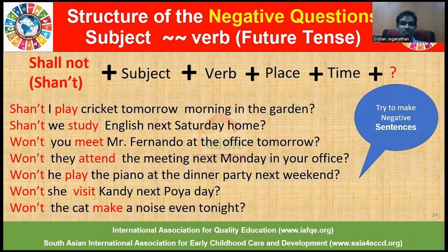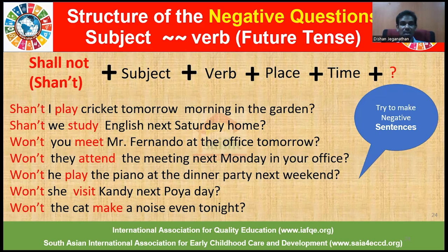Examples for negative questions: Shan't I play cricket tomorrow morning in the garden? Shan't we study English next Saturday at home? Won't you meet Mr. Fernando at the office tomorrow? Won't they attend the meeting next Monday in your office? Won't he play the piano at the dinner party next weekend? Won't she visit Kandy next holiday? Won't the cat make a noise even tonight? The questions begin with either shan't or won't, plus the subject, and verb.